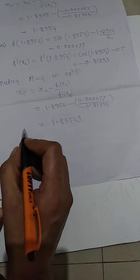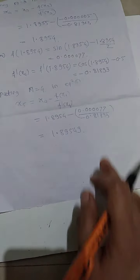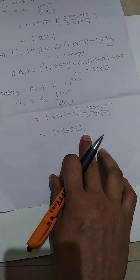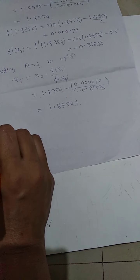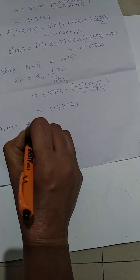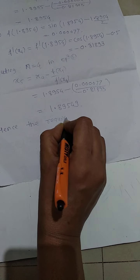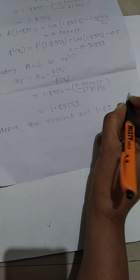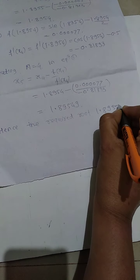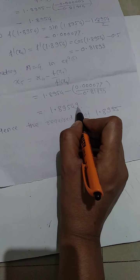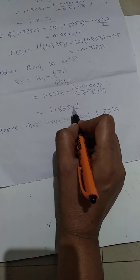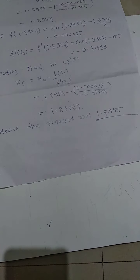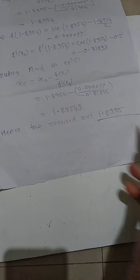Hence, we see that x₄ and x₅ have the same value after 4 decimal places. Therefore the required root of the given equation, correct to 3 decimal places, is 1.8955, since the digit after the third decimal is 9, we round up. The correct value of the given equation is 1.8955.